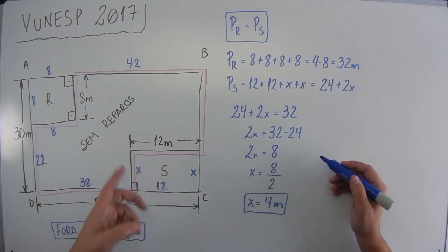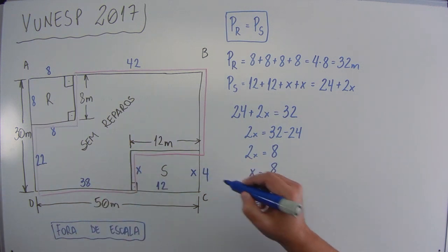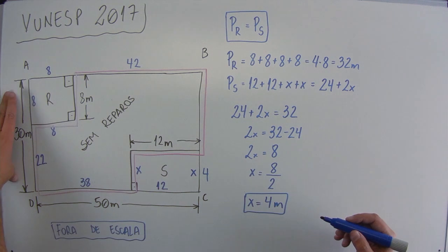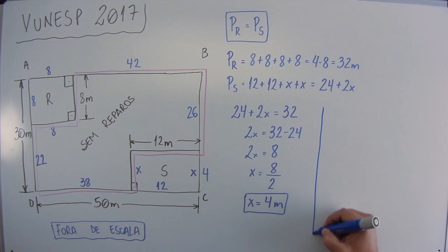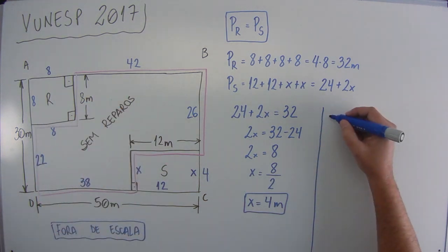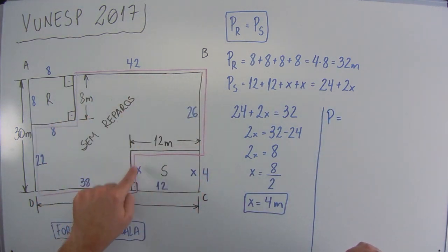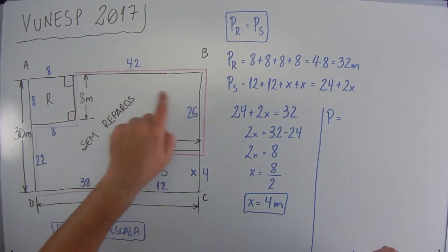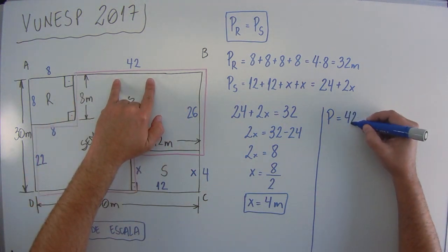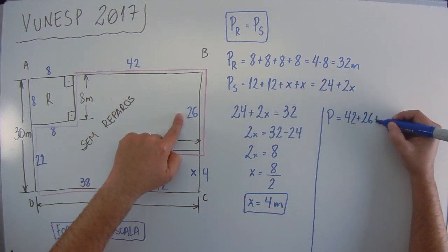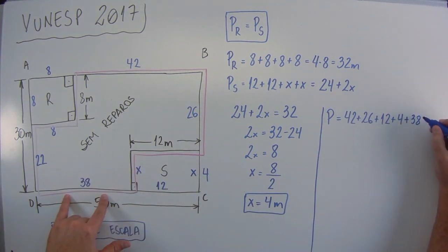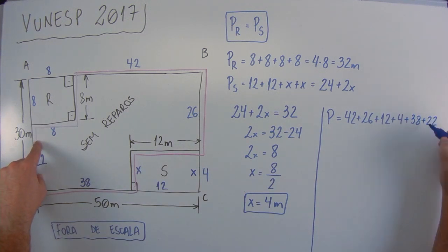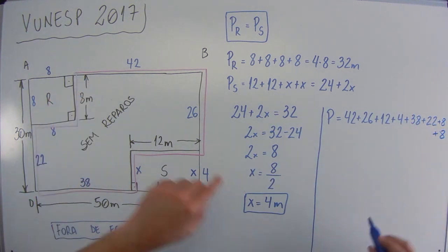Se esse X vale 4, então vamos encontrar o resto das cotas aqui ou dimensões. Se aqui é 4 e aqui tudo é 30, aqui é 26. Agora para a gente achar o perímetro da área sem reparos, que vai ser a soma de todos esses lados do contorno que eu fiz aqui, a figura deve estar um pouquinho apagada, vai ficar 42 mais 26 mais 12 mais 4, que esse X é 4, mais 38, está acabando minha lousa, mais 22, mais 8, mais 8.